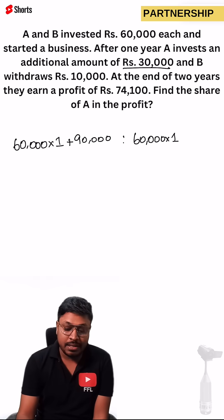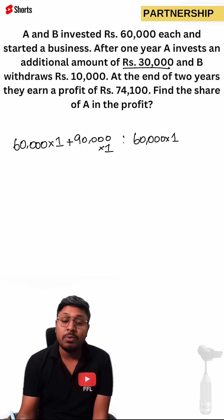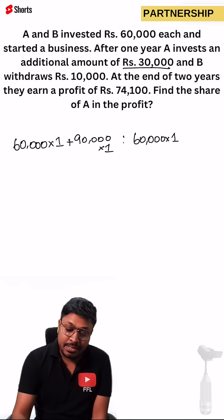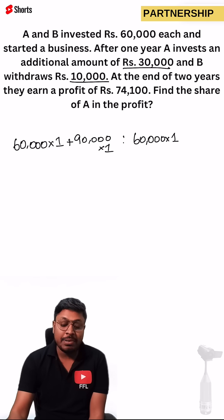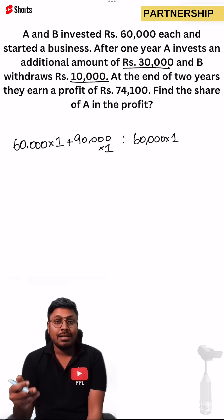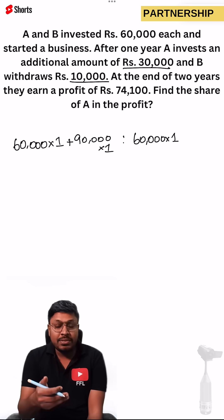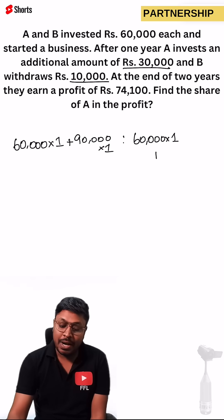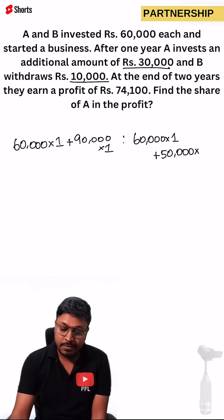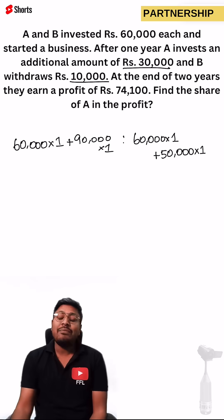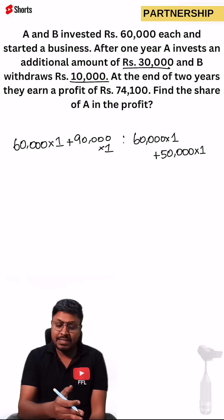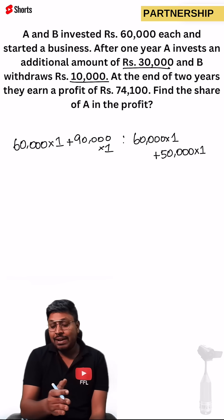Similarly, B withdraws 10,000. He was already investing 60,000, so withdrawing 10,000 means for the remaining one year he will be investing 50,000. Now we have to find their investment ratio.